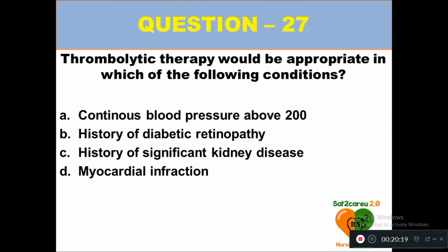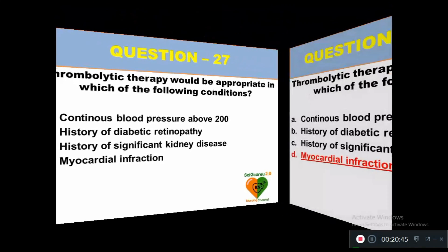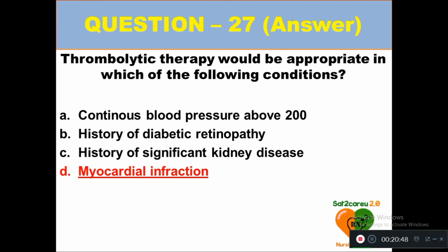Question 27: Thrombolytic therapy would be appropriate in which of the following conditions: option A continuous blood pressure above 200, option B history of diabetic retinopathy, option C history of significant kidney disease, option D myocardial infarction. The right answer is option D — thrombolytic therapy would be appropriate in myocardial infarction to dissolve the clot.